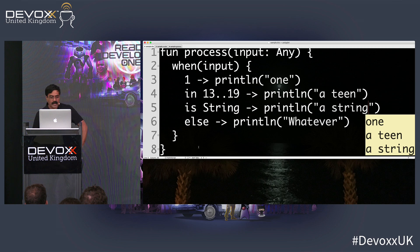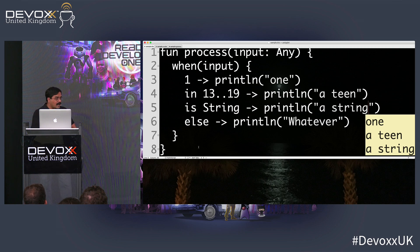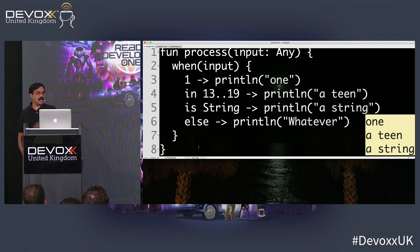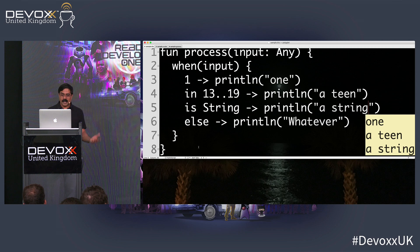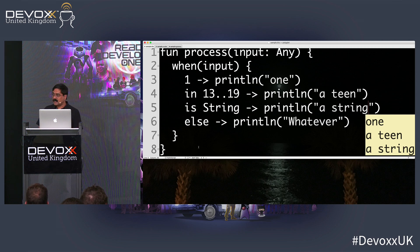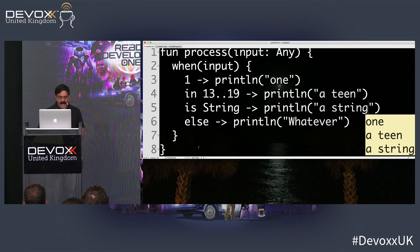You can compare against an object's value, compare in a range of values, or check if it's a certain type. That's pattern matching in Kotlin — you can similarly do things in Scala, and eventually in Java as well.